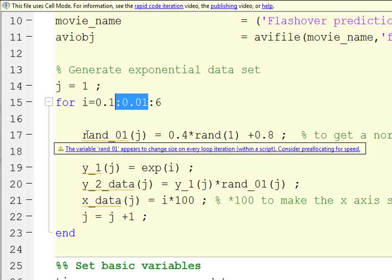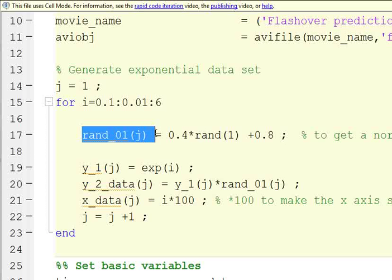And we're going to generate a random variable. We don't want it to be purely exponential, so we need a variable that bounces around a little bit.